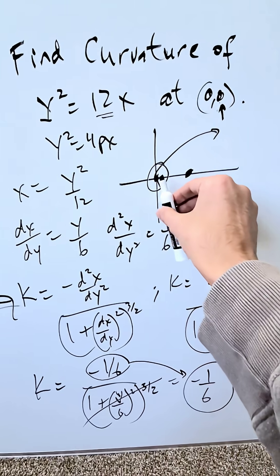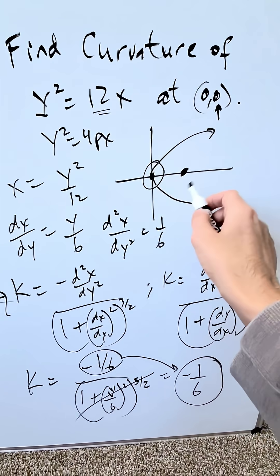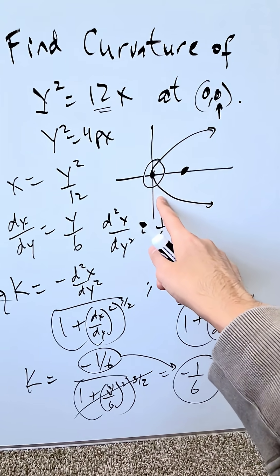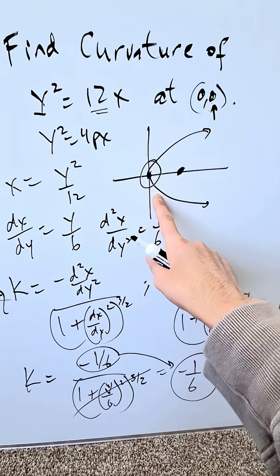Again, curvature is the rate at which the direction changes of your curve at a particular point to the rate at which your arc length is changing at that particular point.